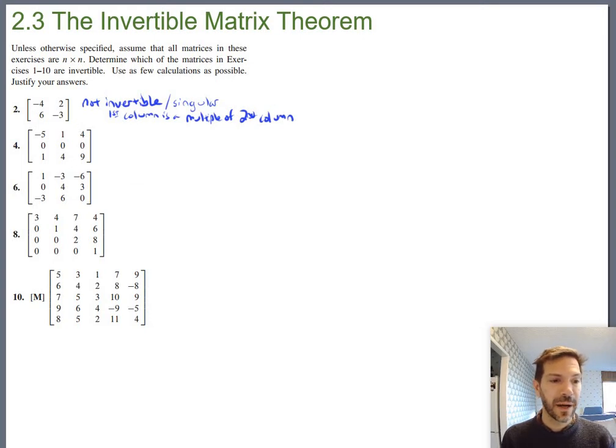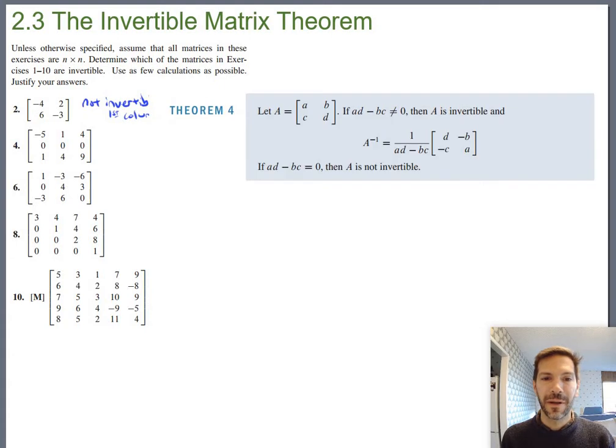That's not the only way to identify that it's not invertible. As a matter of fact, since this happens to be a 2 by 2, if you remember our one trick pony theorem from the last section, it said just for 2 by 2 matrices, if AD minus BC equals 0, then it's not invertible, and otherwise it is. So let's look at AD minus BC. AD is 12, minus BC is 12, 12 minus 12 is 0, so we could have said it's not invertible for that reason too. Again, that only really works for 2 by 2 matrices.